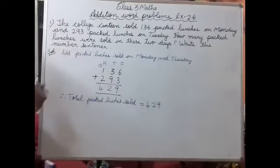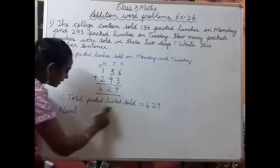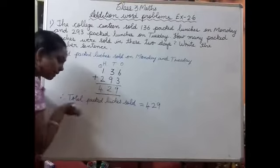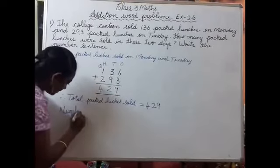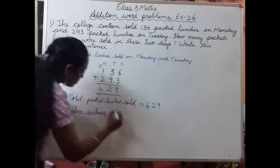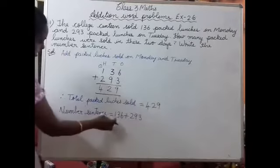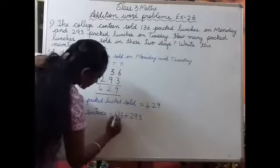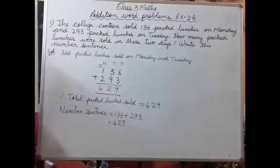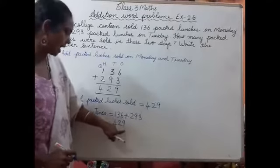We have to write the number sentence also. Number sentence is nothing but you have to write and add these two numbers. This is vertical method; we will write it in horizontal form. Number sentence: 136 plus 293 equals 429. So the answer we got is 429. This is the number sentence - answer is 429.